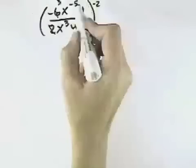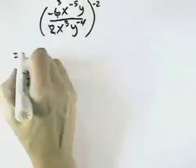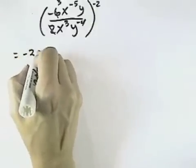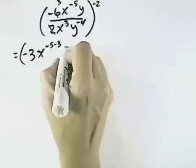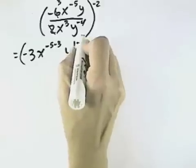The 2 and the 6 cancel, leaving a 3. With the x's I can subtract the exponents, so here I have a negative 3, and I can have x to the negative 5 minus 3, and y to the 1 minus negative 4.